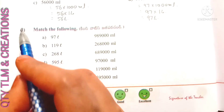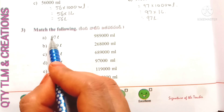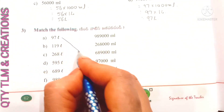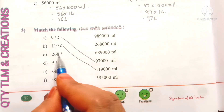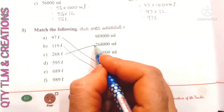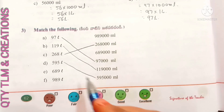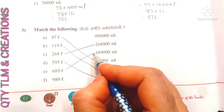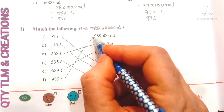Next question: match the following — match liters to milliliters. 97 liters equals 97,000 milliliters. 119 liters equals 119,000 milliliters. 268 liters matches to the corresponding milliliters value. 689,000 milliliters matches its corresponding liters value. 989 liters equals 989,000 milliliters.